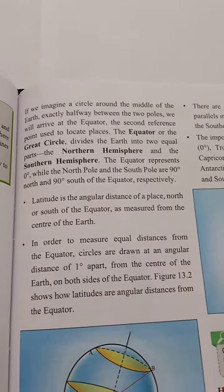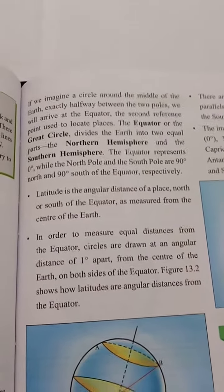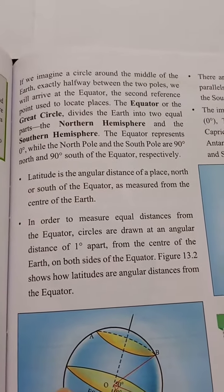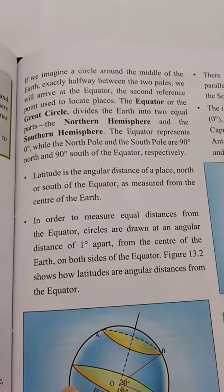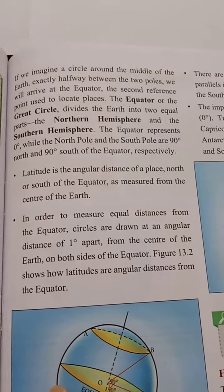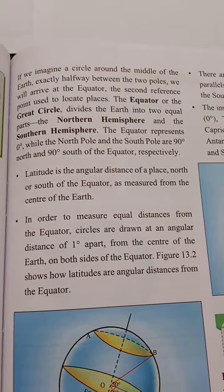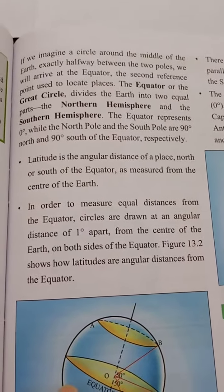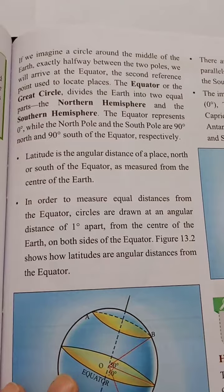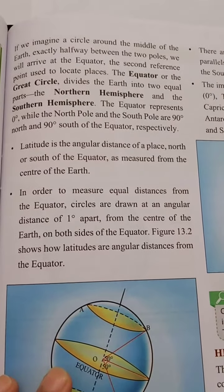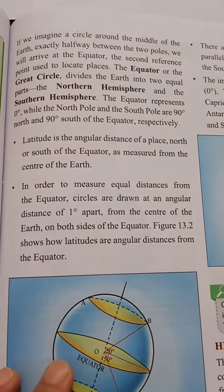Students, we should proceed further and go through the topic of latitudes. Latitude is the angular distance of a place north or south of the equator, as measured from the center of the earth. In order to measure equal distances from the equator, circles are drawn at an angular distance of 1 degree apart from the center of the earth on both sides of the equator.